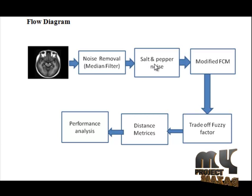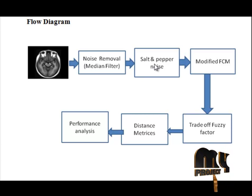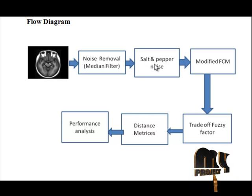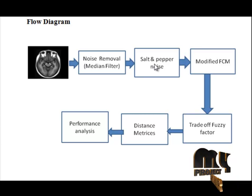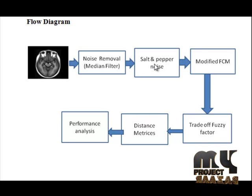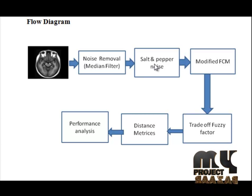The next block is the salt and pepper noise block, also called the image corruption block. We add salt and pepper noise to the input image. Salt and pepper noise is a form of noise typically seen on images, representing itself as randomly occurring white and black pixels. It creeps into images in situations where quick transients such as faulty switching take place.